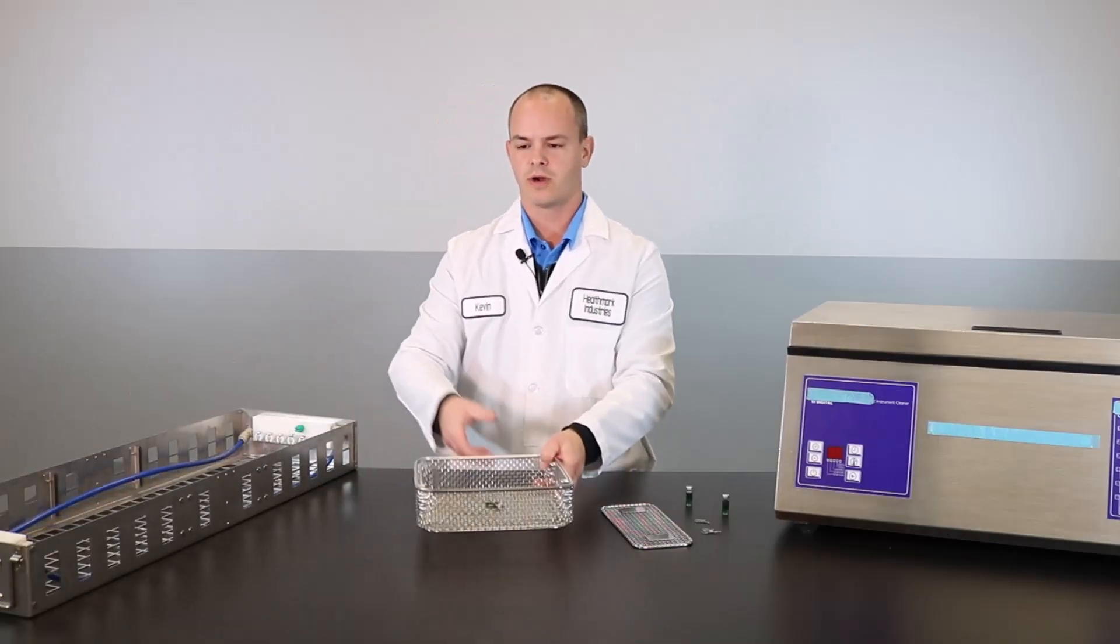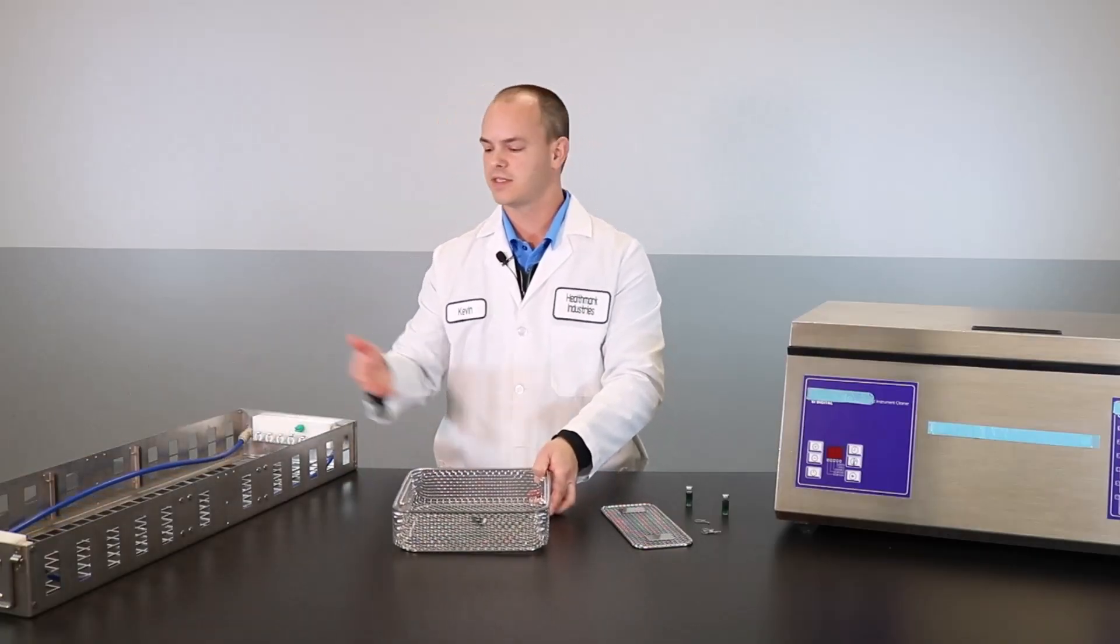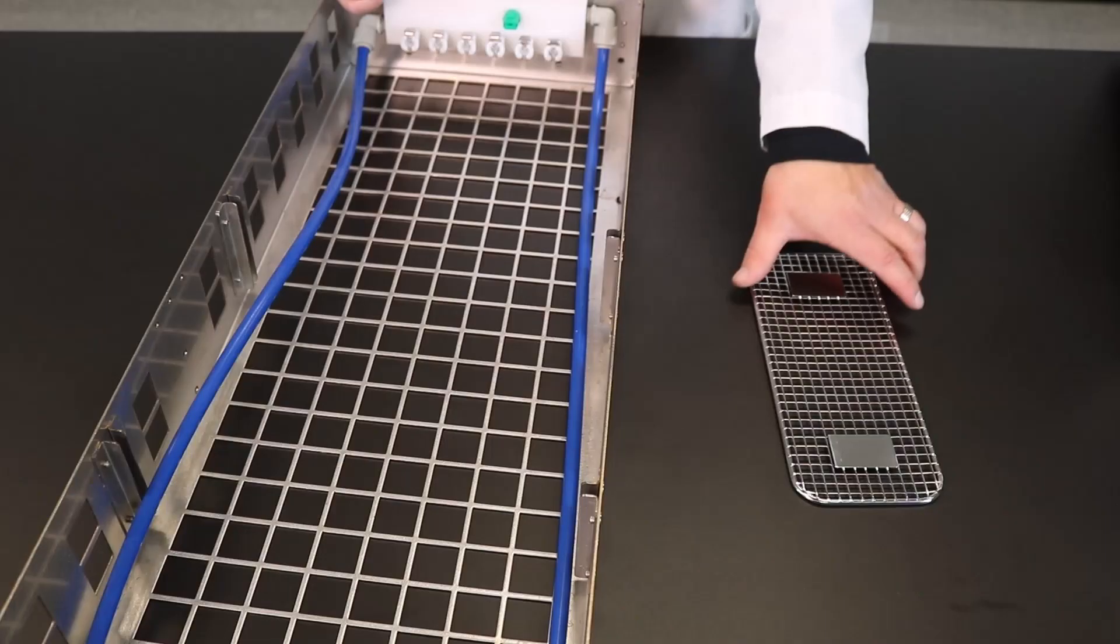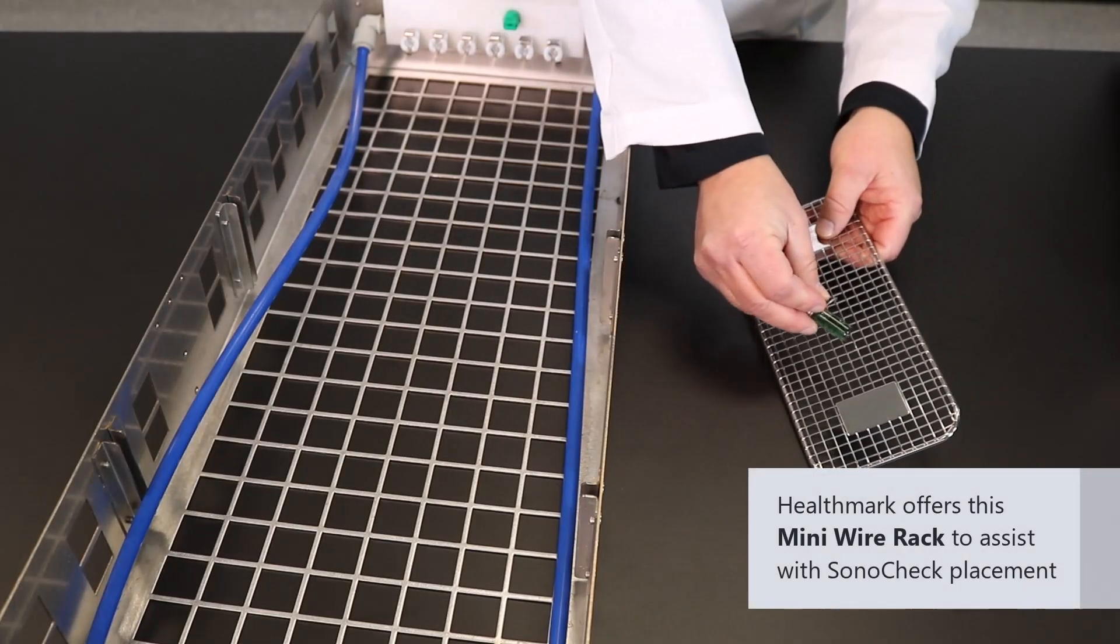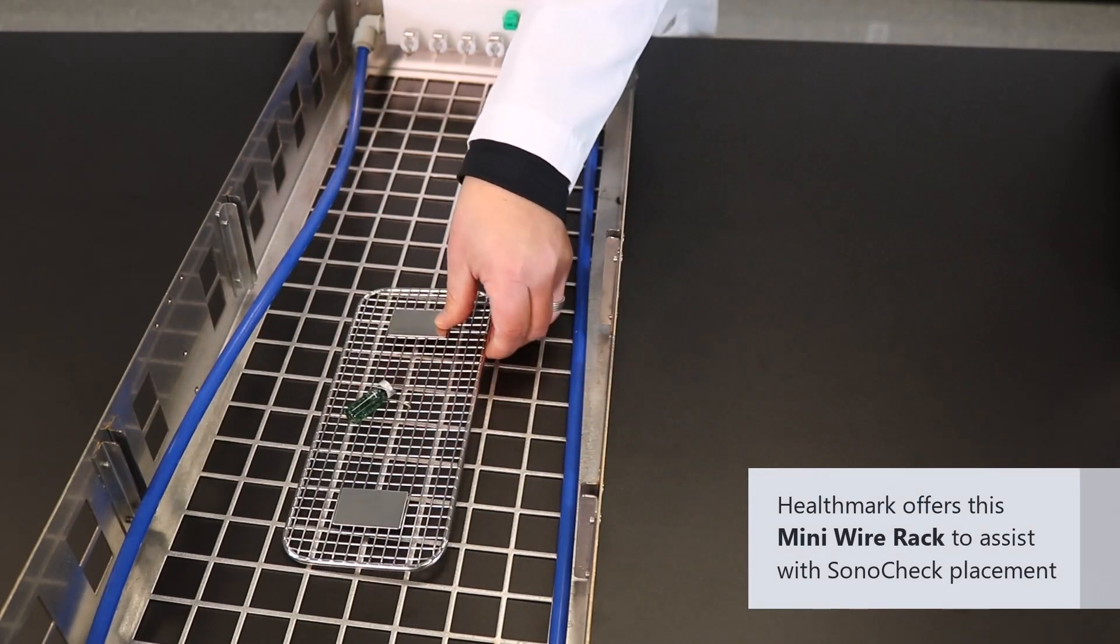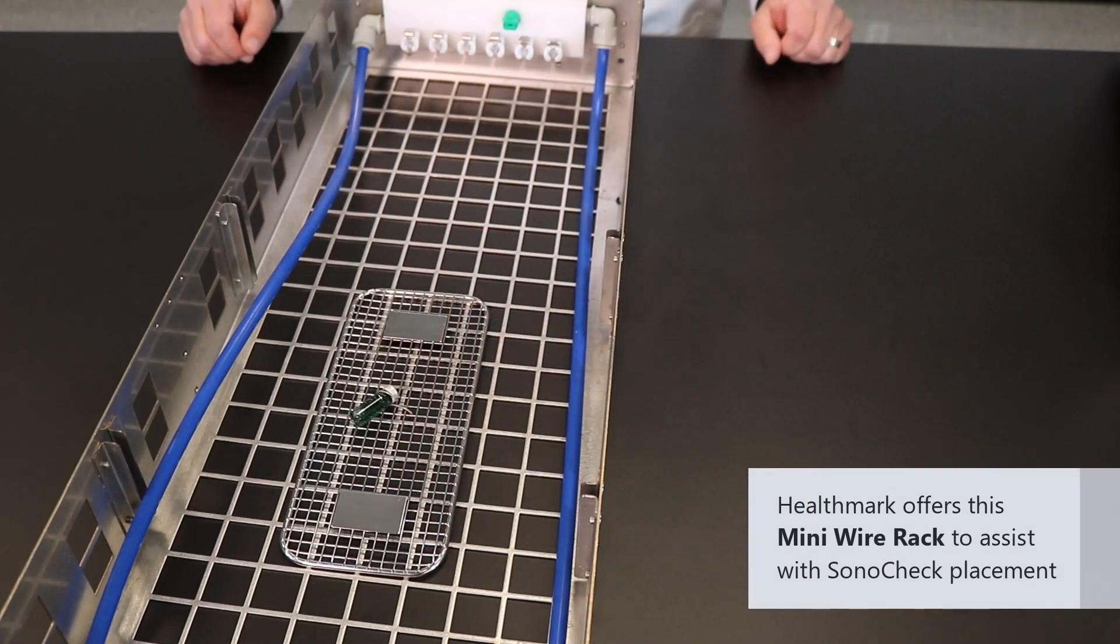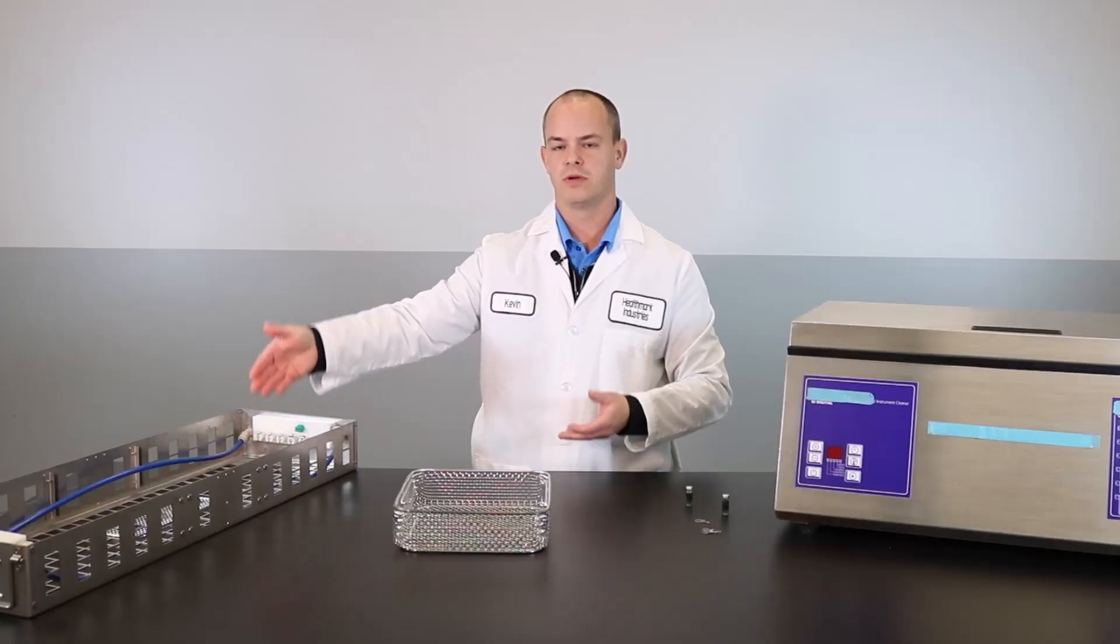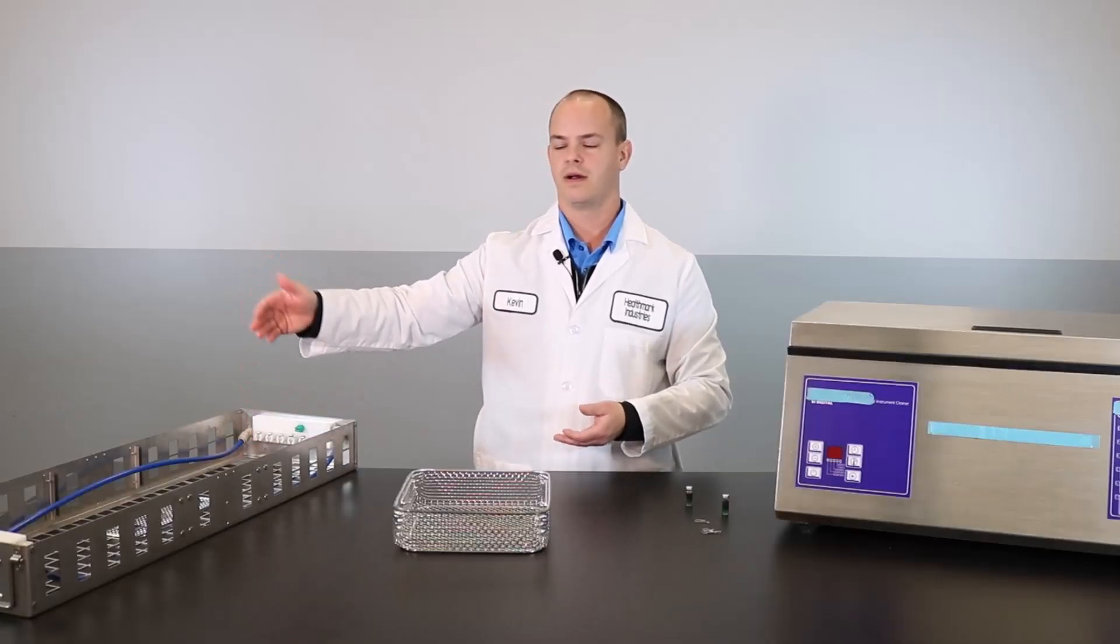If that doesn't work, say if your basket doesn't fit properly in there, you might use something more like this. You still can hook your SonoCheck to this really nicely, and it will sit at the bottom of that tray, and then you will just do one per tray for each level.